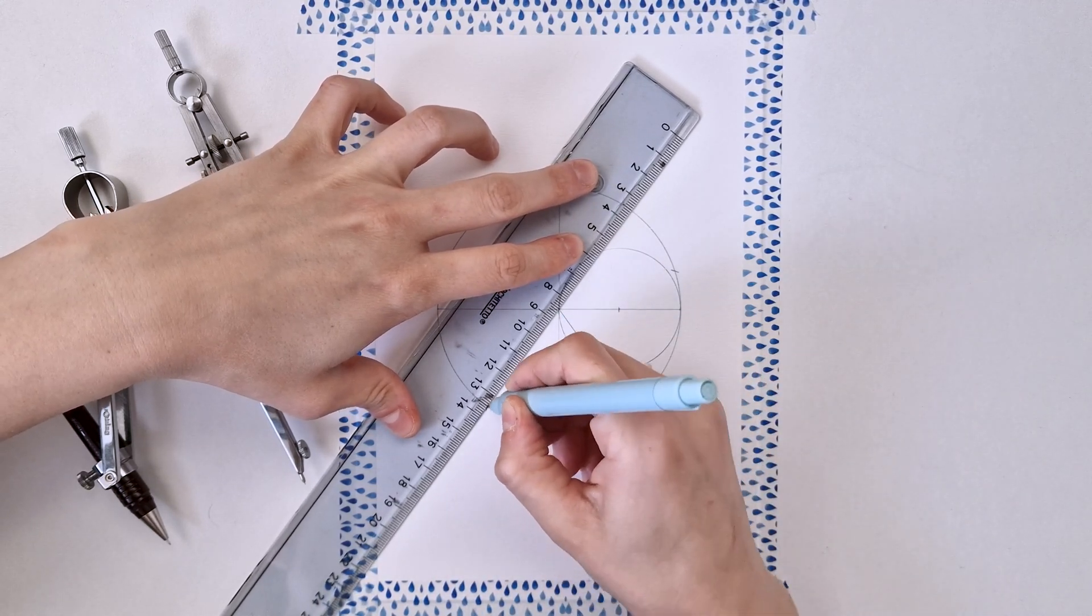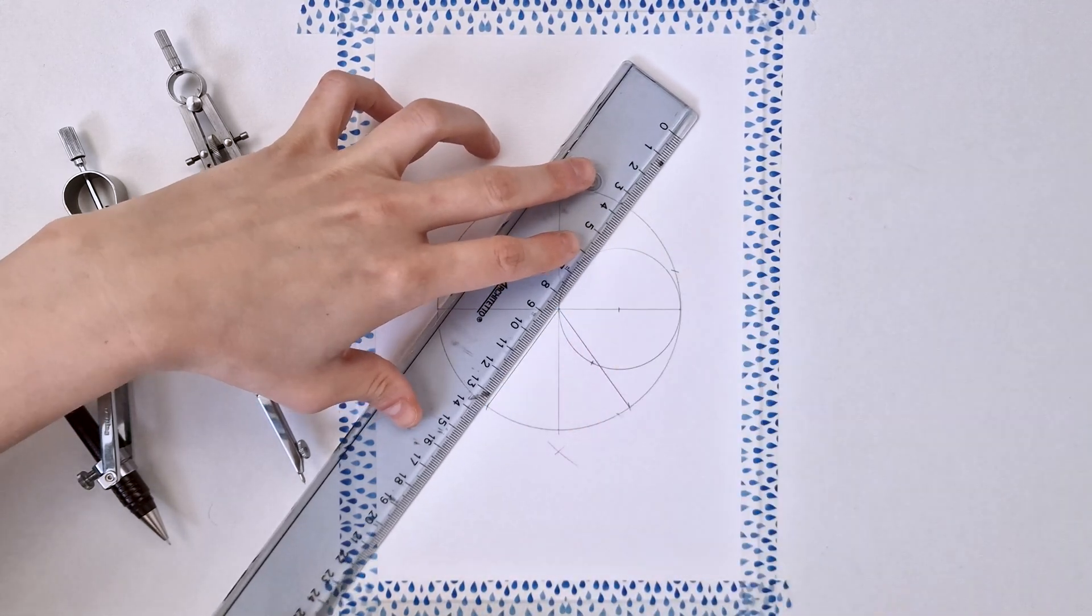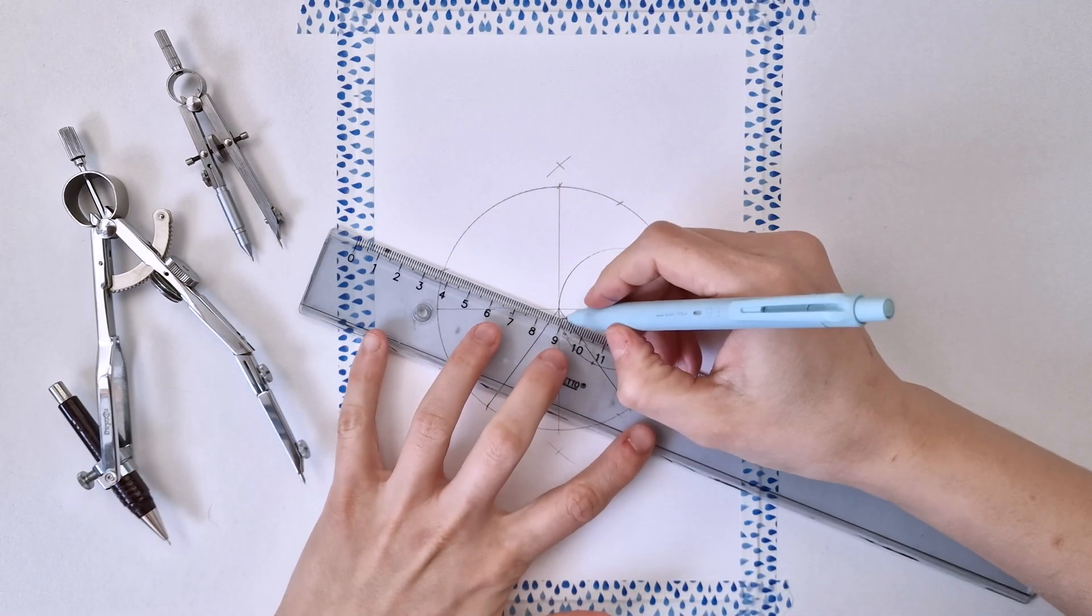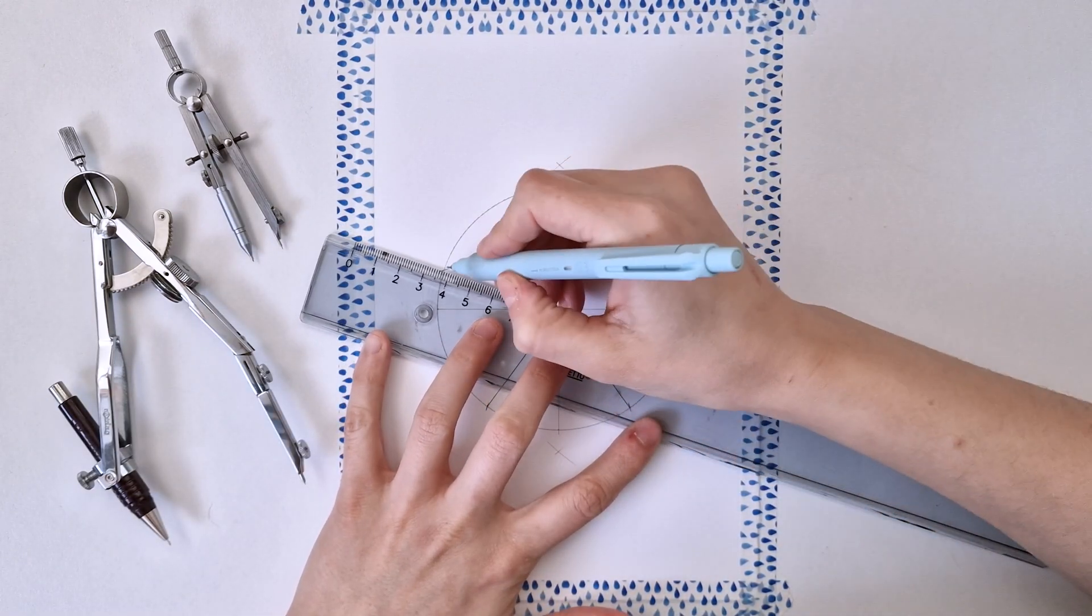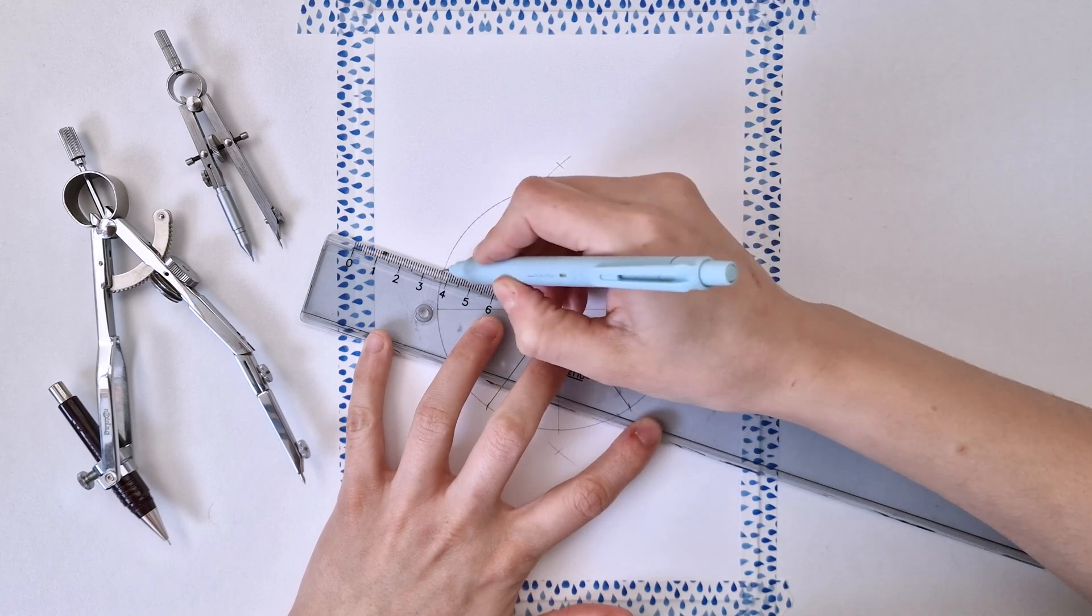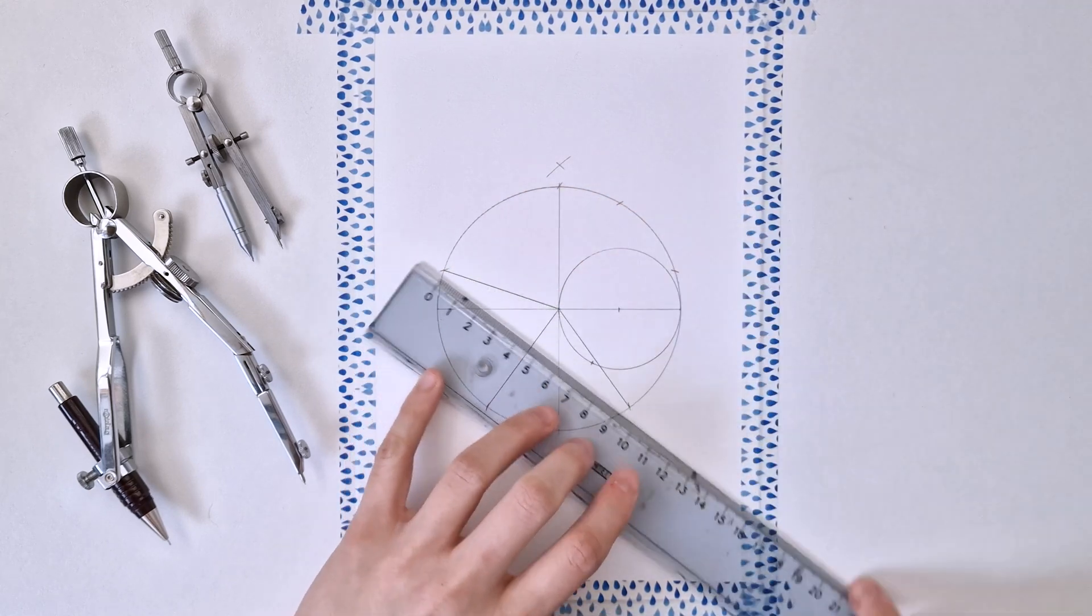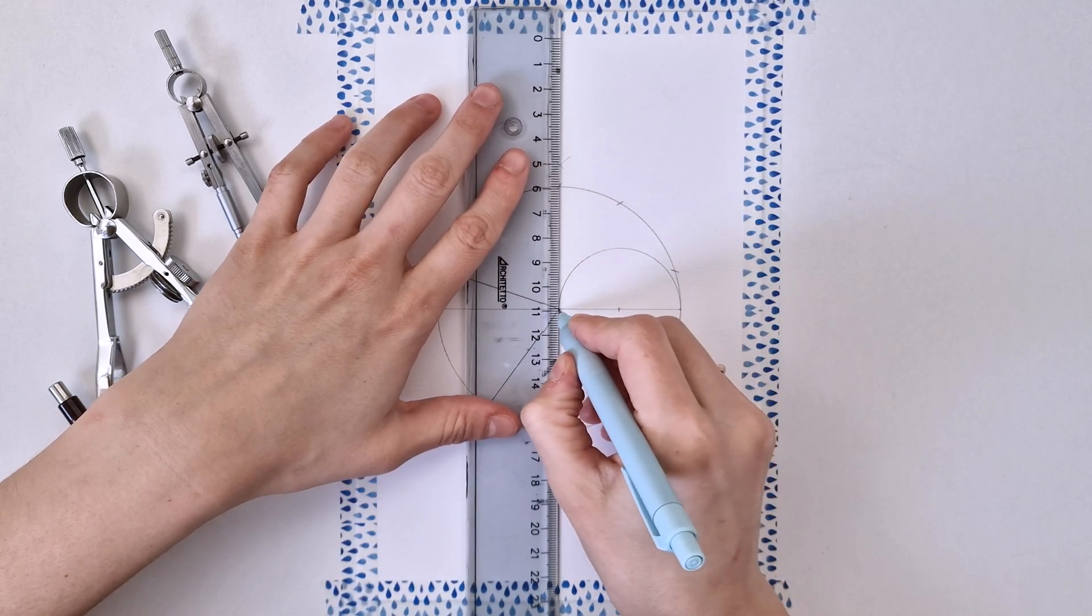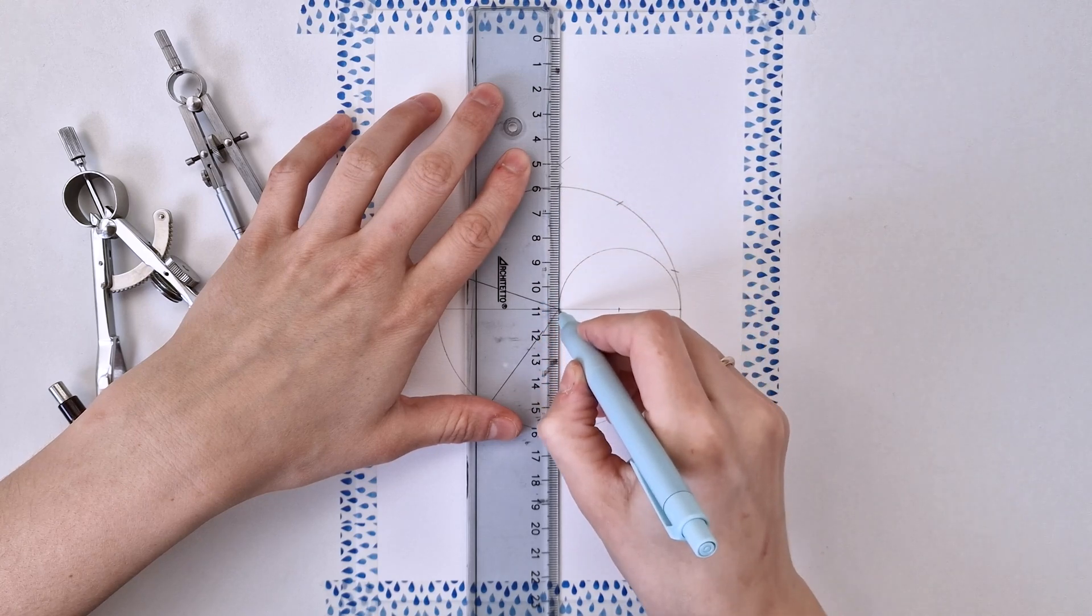You will not need the horizontal line so you can delete it and also you will just need half of the vertical line. So this half right here but not the other one. The other one can be deleted.